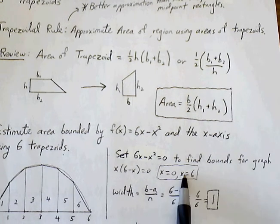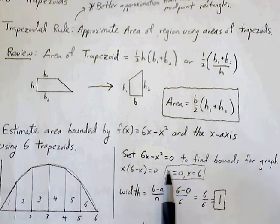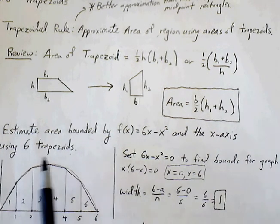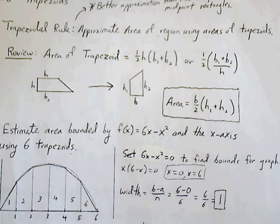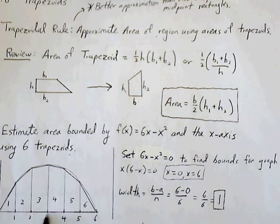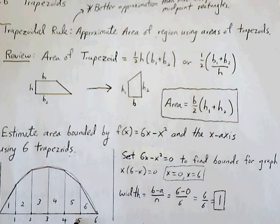So now our width is simply going to be determined by the a and b values as well as our n. Our n value is 6. We want 6 intervals or 6 trapezoids. So our width is b minus a over n. 6 minus 0 over 6. 6 over 6 is 1. So starting at 0, we're going to increment by 1 until we get to 6. So our width is simply going to be by intervals of 1.